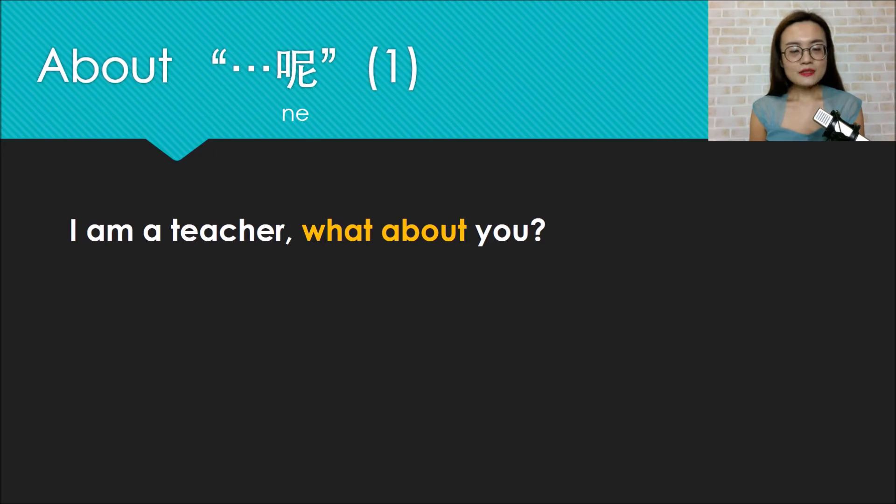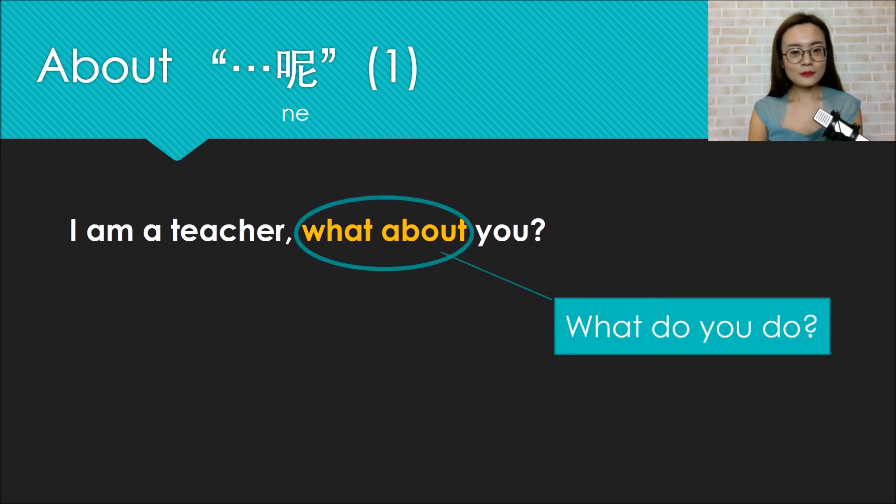Look at this sentence: I'm a teacher. What about you? What about here means what do you do, what's your job. But you don't want to repeat the whole question again, right? Like you don't want to say I'm a teacher, are you a teacher. You don't have to repeat the question, but just simply say what about.